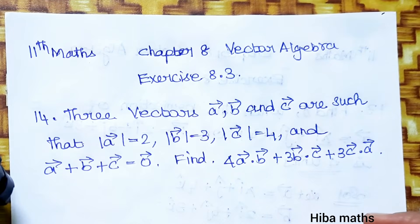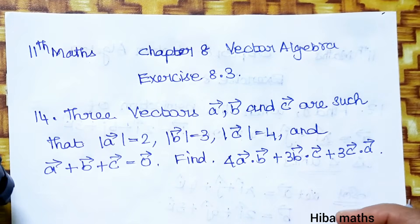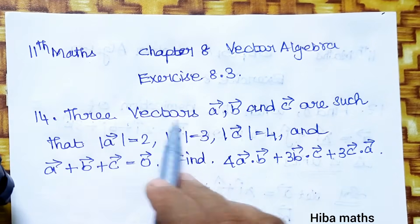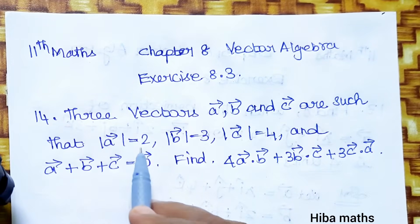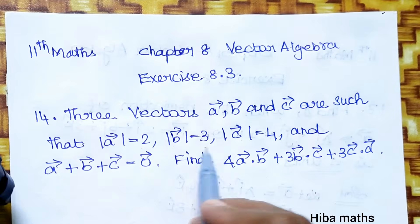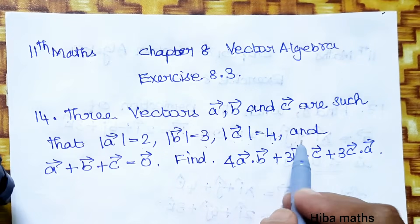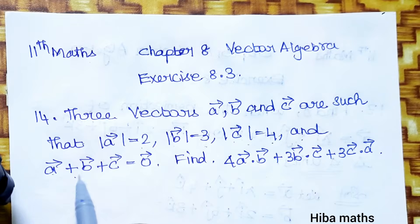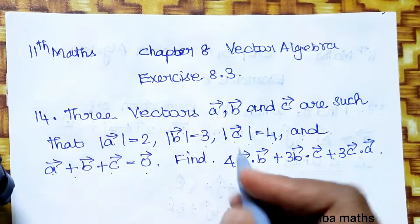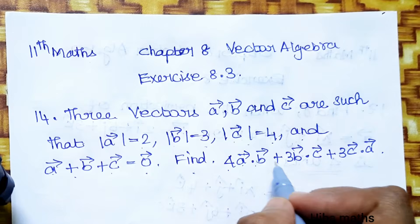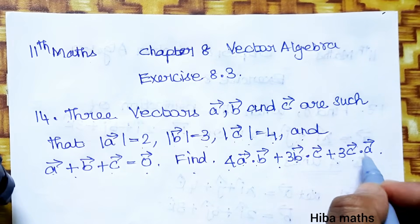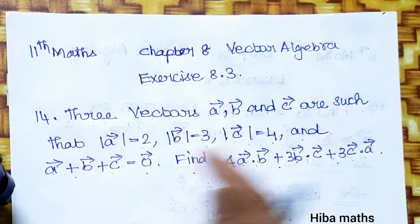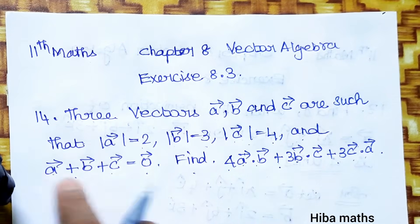Hello students, welcome to Heba Max, 11th standard, Chapter 8 Vector Algebra, Exercise 8.3, 14th question. Three vectors a, b, and c are such that modulus of a = 2, modulus of b = 3, and modulus of c = 4, and a + b + c = 0 vector. Find 4(a·b) + 3(b·c) + 3(c·a).